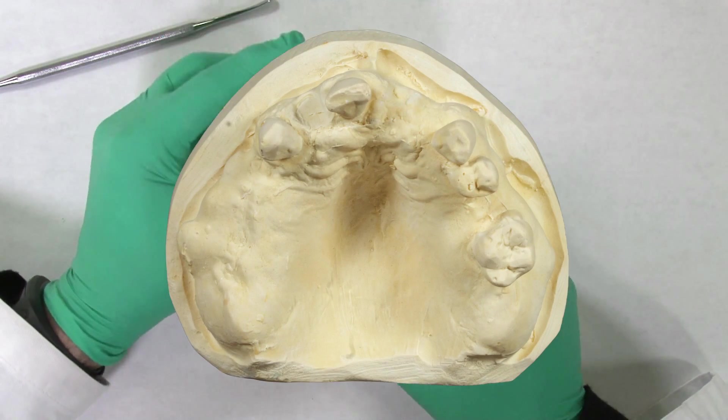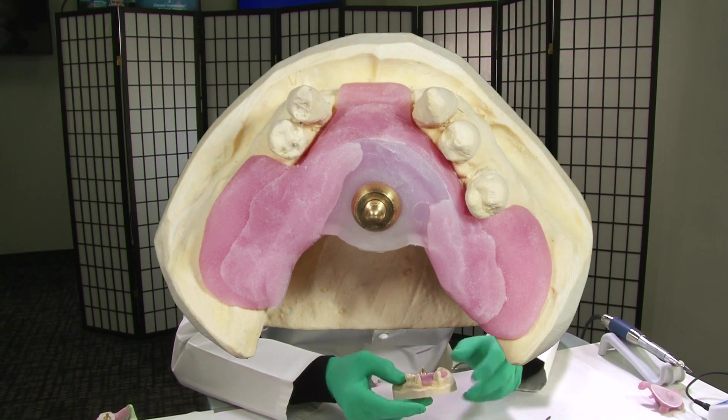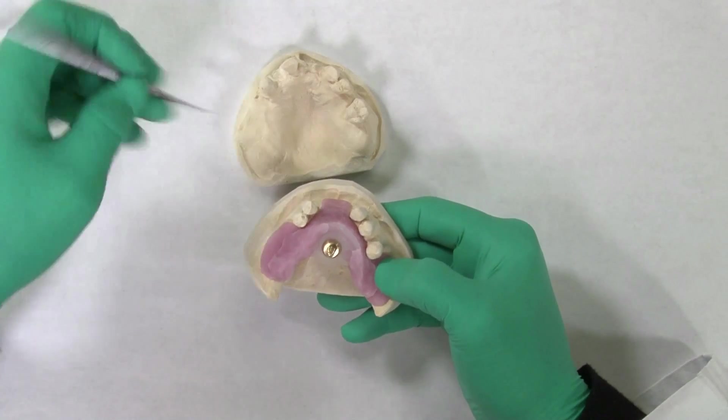On the maxillary arch, there are also mobile teeth combined with large tori. In these cases, a record base is fabricated with tissue stops in the edentulous areas for stability.